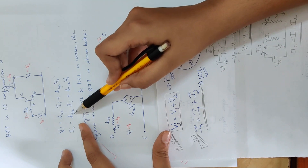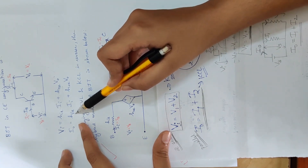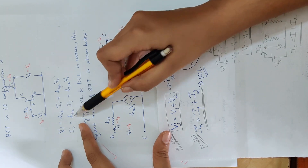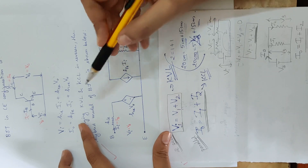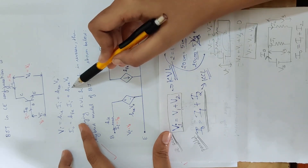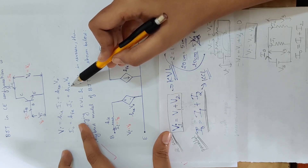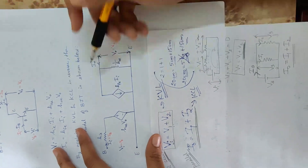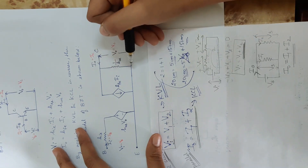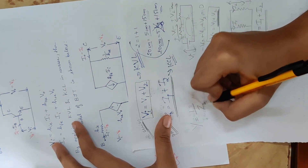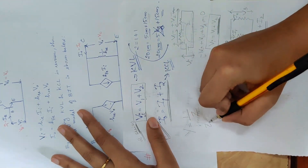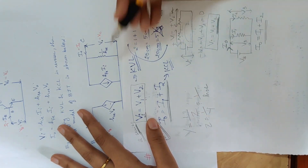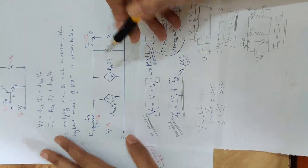HFe into Ii is the forward current ratio — the dependent current source, represented by a diamond shape with an arrow. Plus HOE into VO. HOE is the output admittance. I represent this as a resistor of value 1 by HOE.